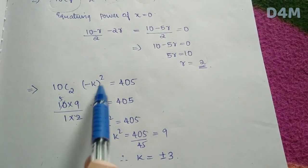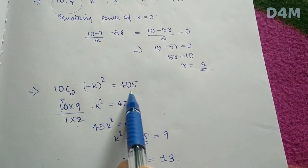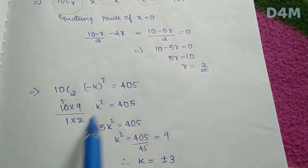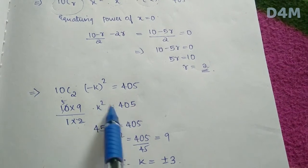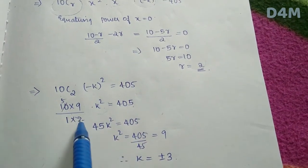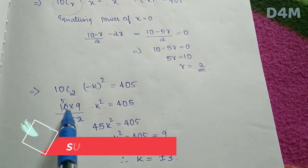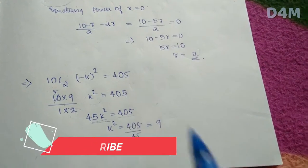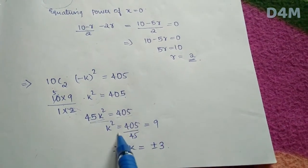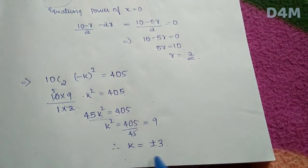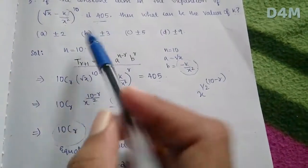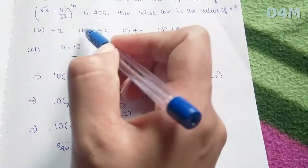So 10C2 · (-k)² = 4.05. 10C2 = 10×9/(1×2) = 45. Then k² = 4.05/45... working through: k² = 9, so k = ±3. Option B is the right answer.